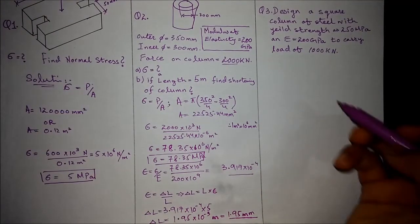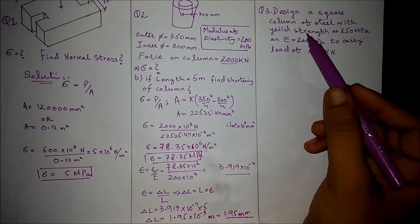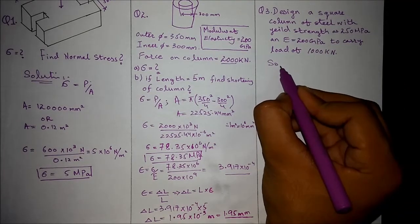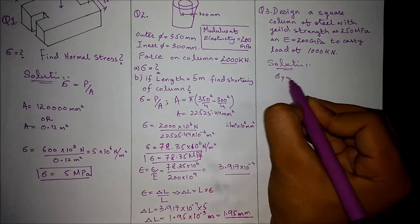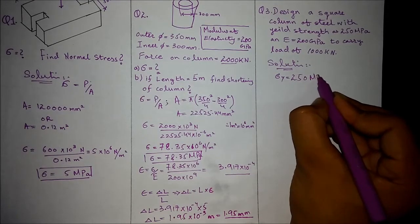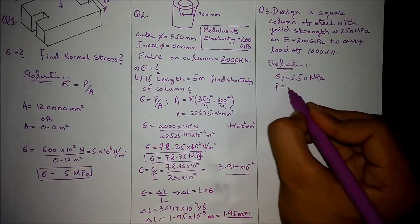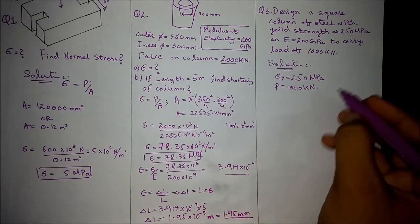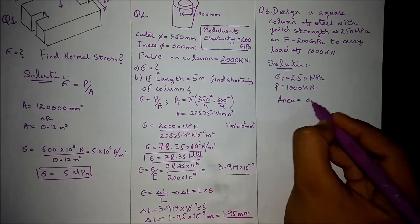In the third question related to the stresses, we are required here to design a steel column with yield strength 250 megapascal. We are given here the maximum strength that can bear within elastic limits. Area of square is equals to A square if we are the dimension square as A.